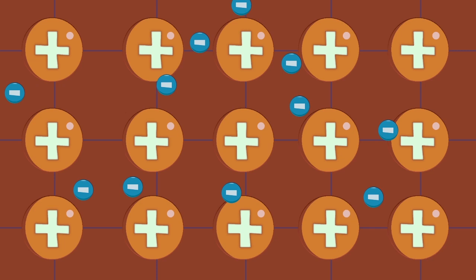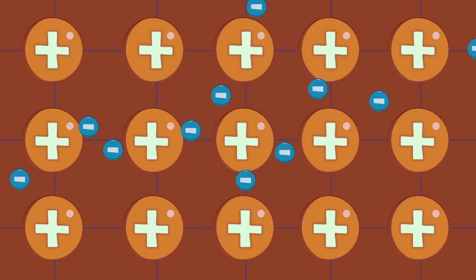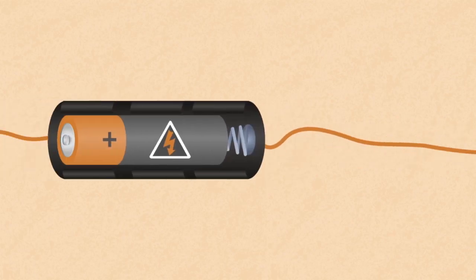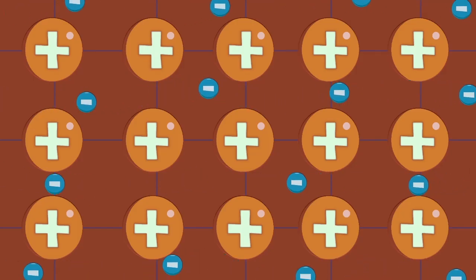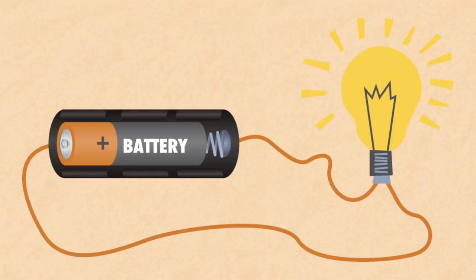The loosely held electrons are free to move randomly in a metal, but once a battery or source of voltage is applied, the electrons flow in one direction generating an electric current in the metal.